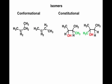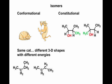So here, side by side, we have a set of conformational and constitutional isomers. Now this concept might seem a little bit abstract, so I want to show you how we can apply this to objects we know and understand in real life — for example, cats, because both cats and molecules are three-dimensional objects. So here on the left, we have the same cat, but in two different conformations: two different three-dimensional shapes of different energies.